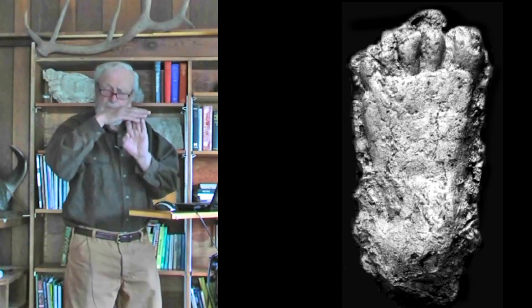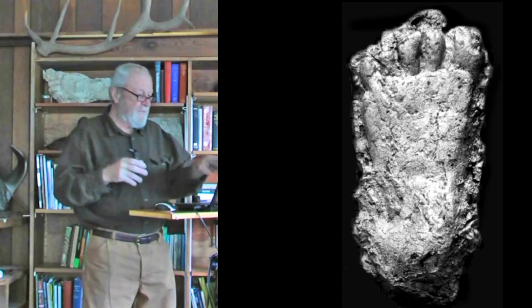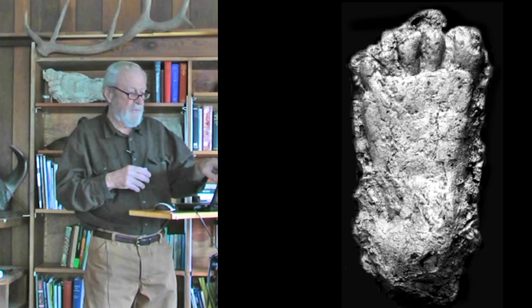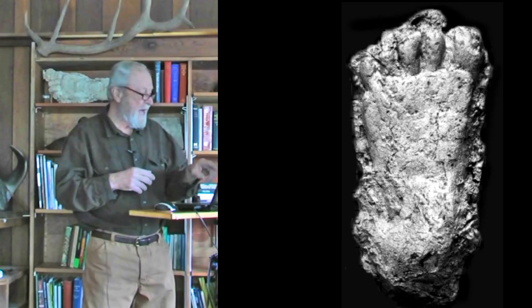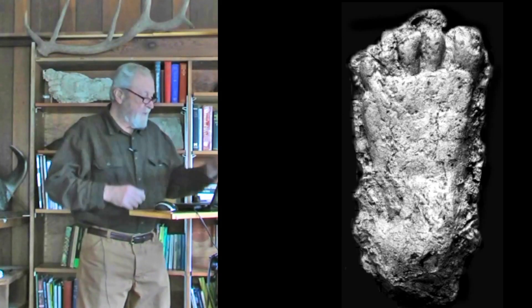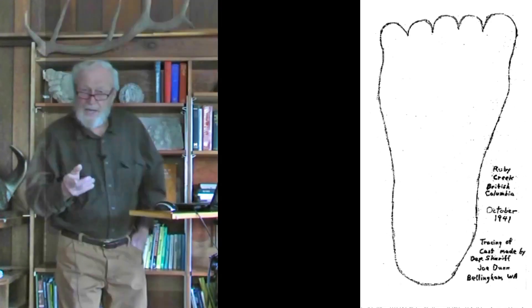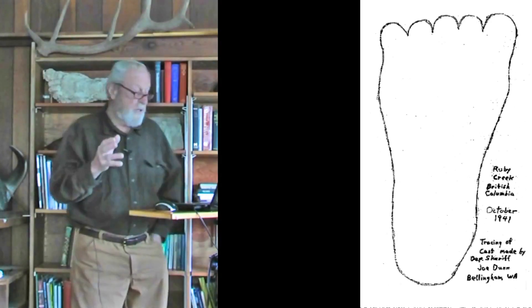And that is the relatively straight line across the leading edge of the toes. It's been described often, drawn for us, almost never photographed. But here we see a pretty good depiction of it in a photograph and a cast. What's interesting about that feature is that it occurred in the first Sasquatch track ever cast, as far as we know.